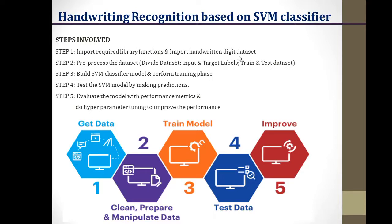Step one is to import the required library functions and import the dataset. Here we have considered the task to recognize handwritten digits, and the famous MNIST dataset has been used. Step two is to pre-process the data. The data imported initially will be raw, so we have to pre-process the dataset by dividing it into input features and output labels, and also splitting it into training set and testing set.